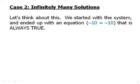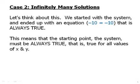We started with the system and ended up with an equation, negative 10 equals negative 10. In other words, an equation that is always true. It doesn't matter what x or y equal. It's always going to be true that negative 10 equals negative 10. That is true 100% of the time. So, it is a truth not dependent on the values of x and y. Well, that means if we wind up with something that's always true, we must have started with something that was always true. It means that the starting point, the system, must be always true. That is true for all values of x and y. No matter what we make the values of x and y, we will have a system that works. We will have a true system.